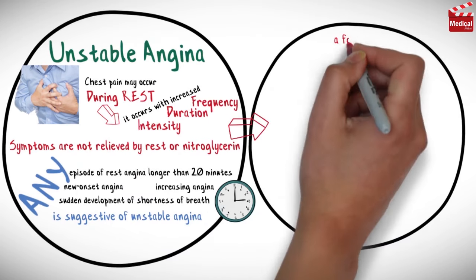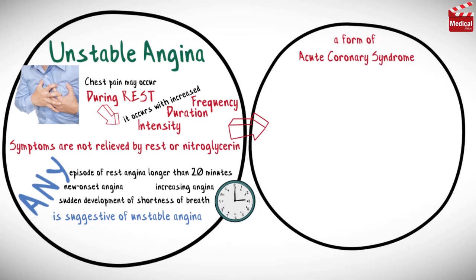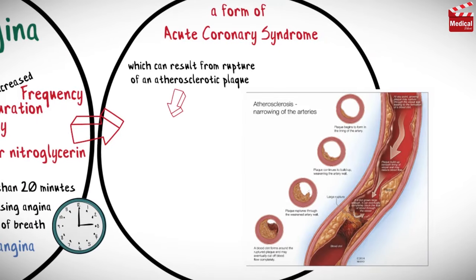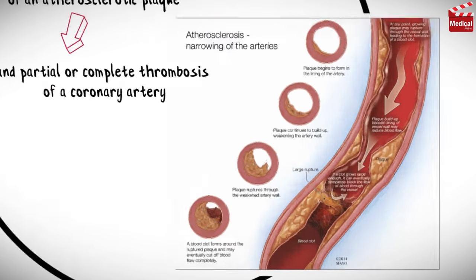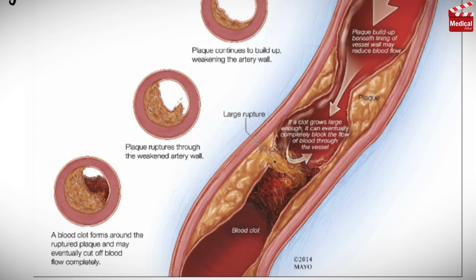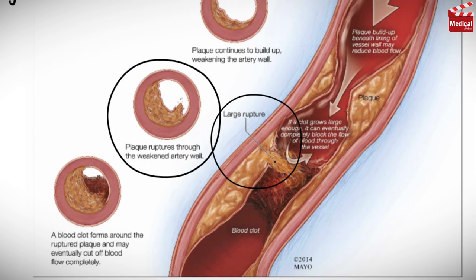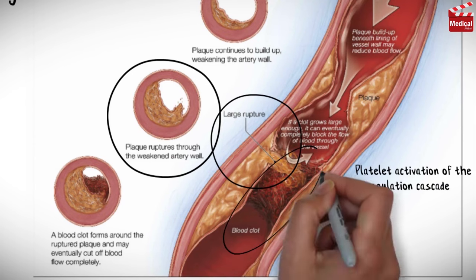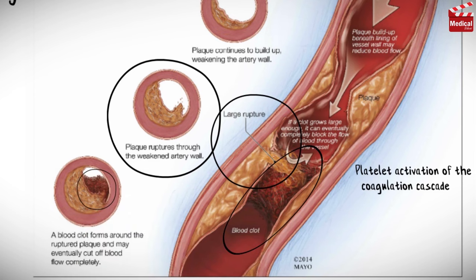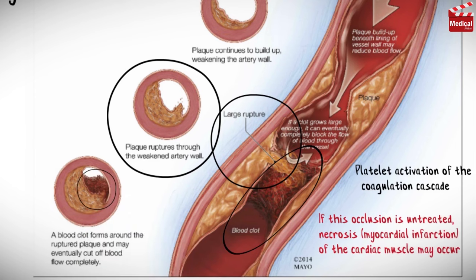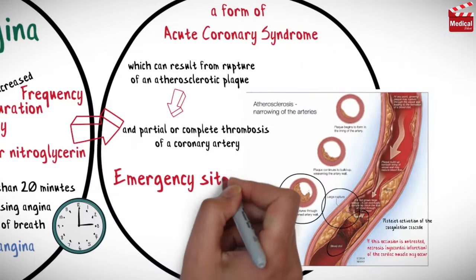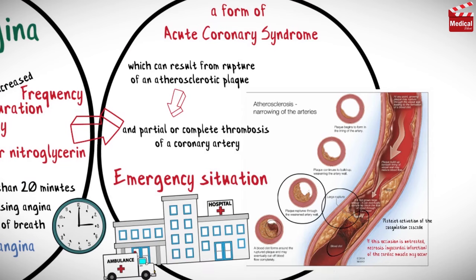Unstable angina is a form of acute coronary syndrome resulting from rupture of an atherosclerotic plaque and partial or complete thrombosis of a coronary artery. Most cases occur from disruption of an atherosclerotic lesion followed by platelet activation of the coagulation cascade, resulting in partial or complete occlusion. If untreated, necrosis and myocardial infarction of the cardiac muscle may occur, making it an emergency requiring hospital admission and aggressive therapy.